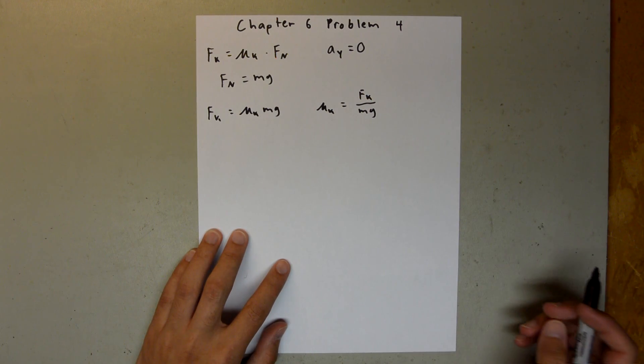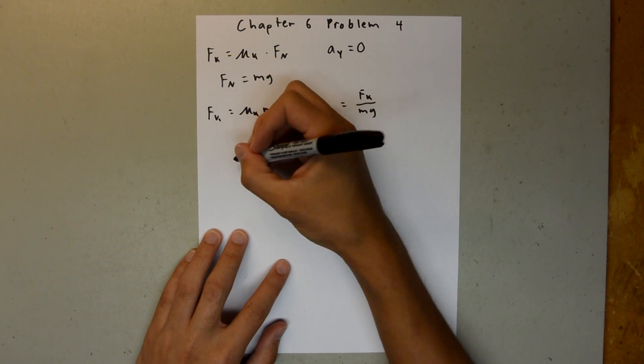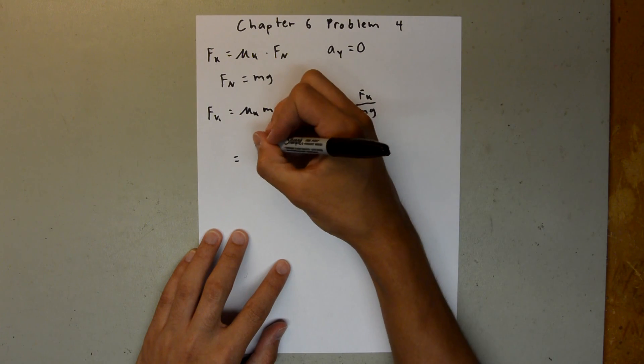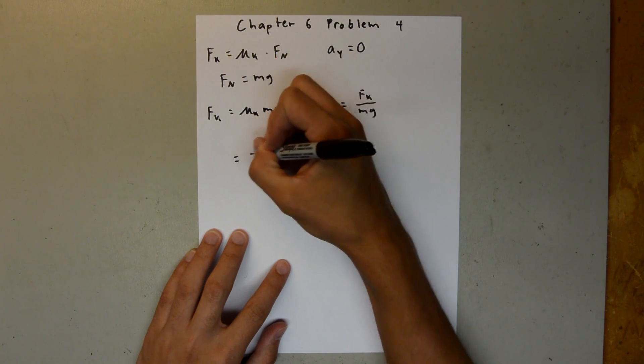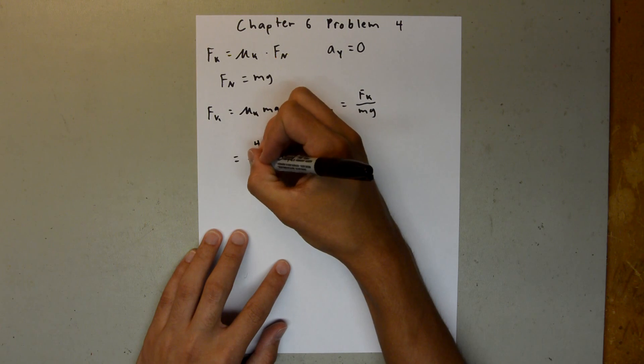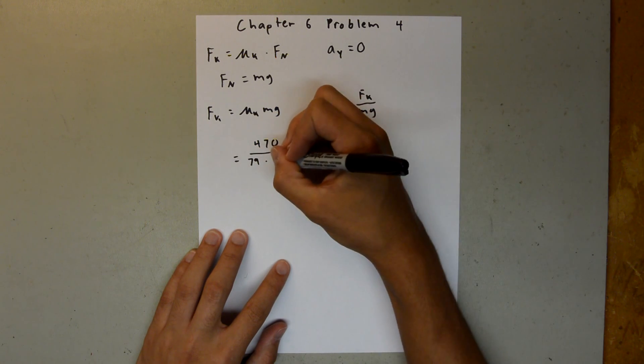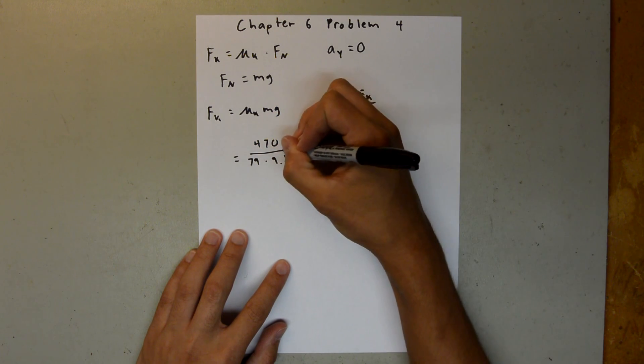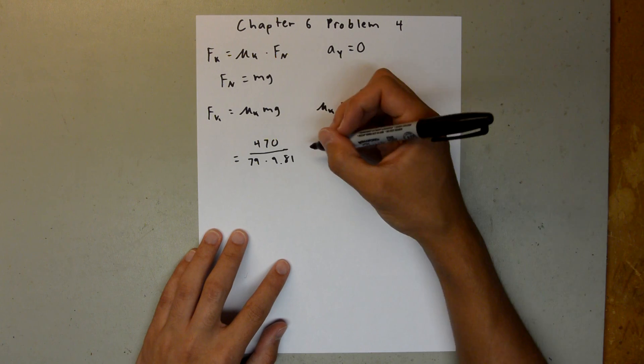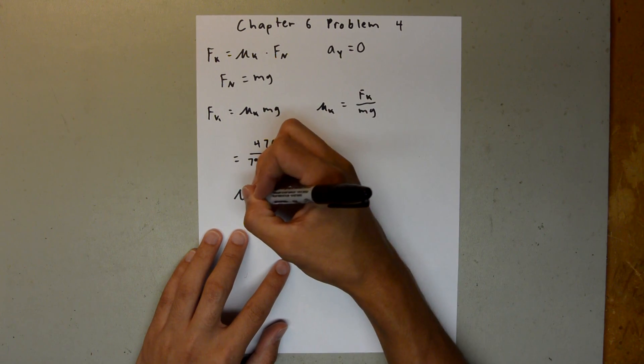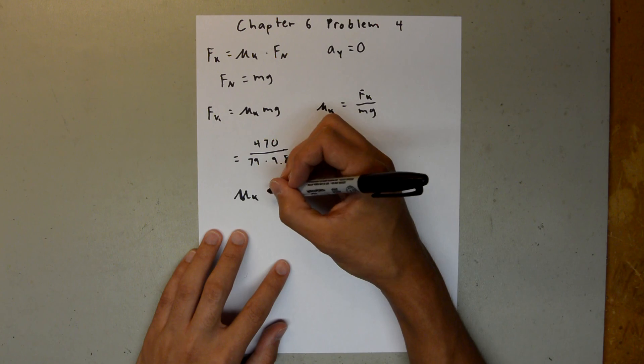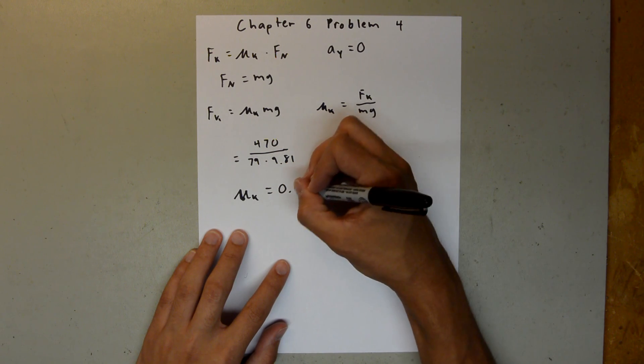And we are given all those values in the problem, so we can plug them right in, and say 470 divided by 79 times 9.81. And when you plug that into your calculator, you should get a mu k equal to 0.61,